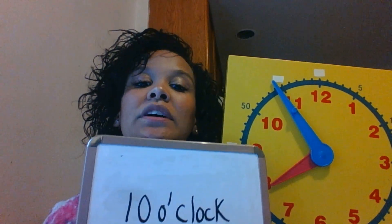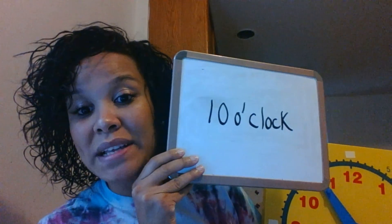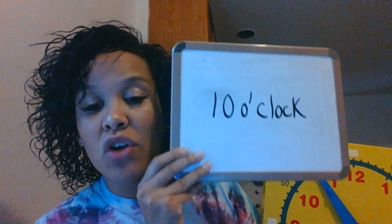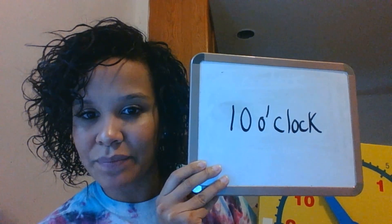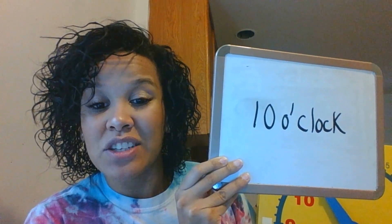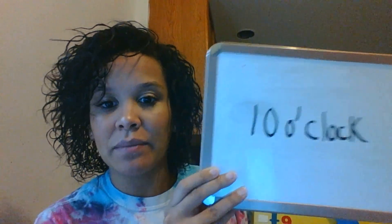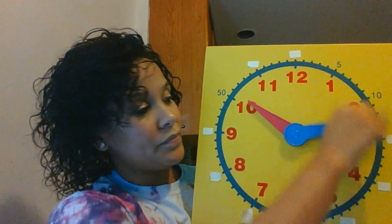Our last part of the time-by-the-hour lesson is your turn. I'm going to show a time on my clock and your job is to write it down on a piece of paper, just like this: the number goes first, then the letter O, apostrophe, clock. We want to practice writing it too, for extra practice, so we not only know how to show the time but also how to write it the word way — not the digital way.